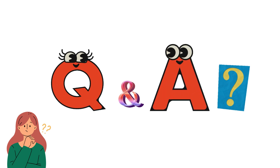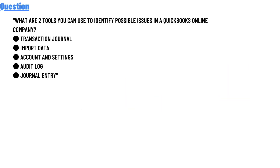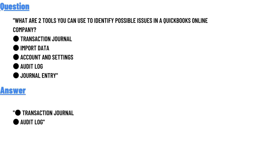Today's question is: what are two tools you can use to identify a possible issue in QuickBooks Online company transactions? The options are journals, import data, account and settings, added logs, and journal entry. The correct answer is transaction journal and added logs.